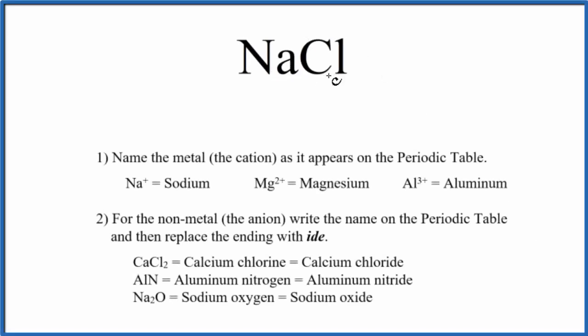To write the name for NaCl, we first need to recognize that this is an ionic compound. We have a metal and a nonmetal, so that makes it an ionic compound.